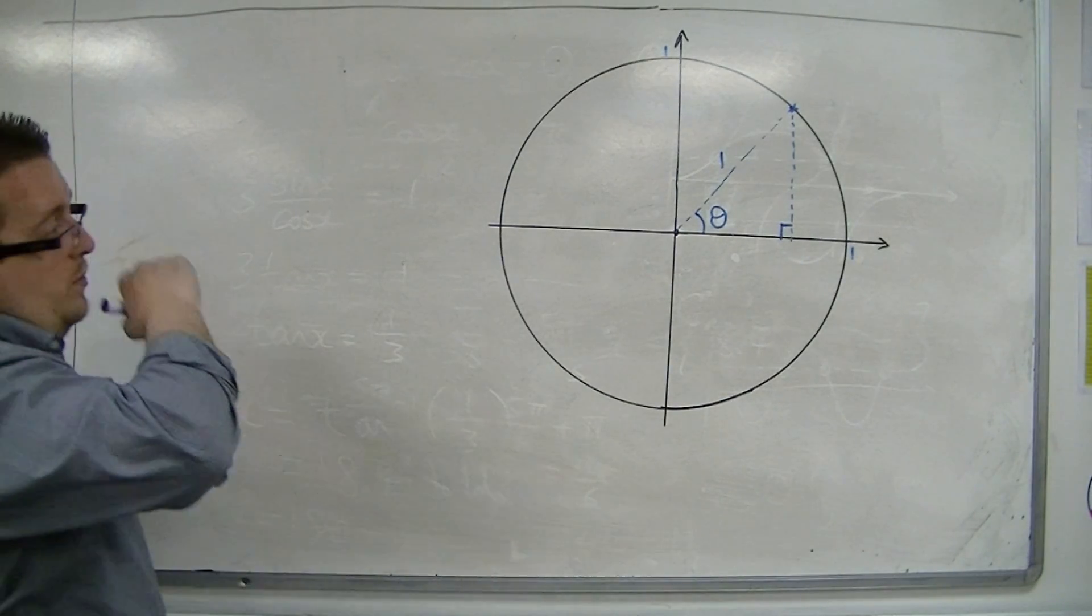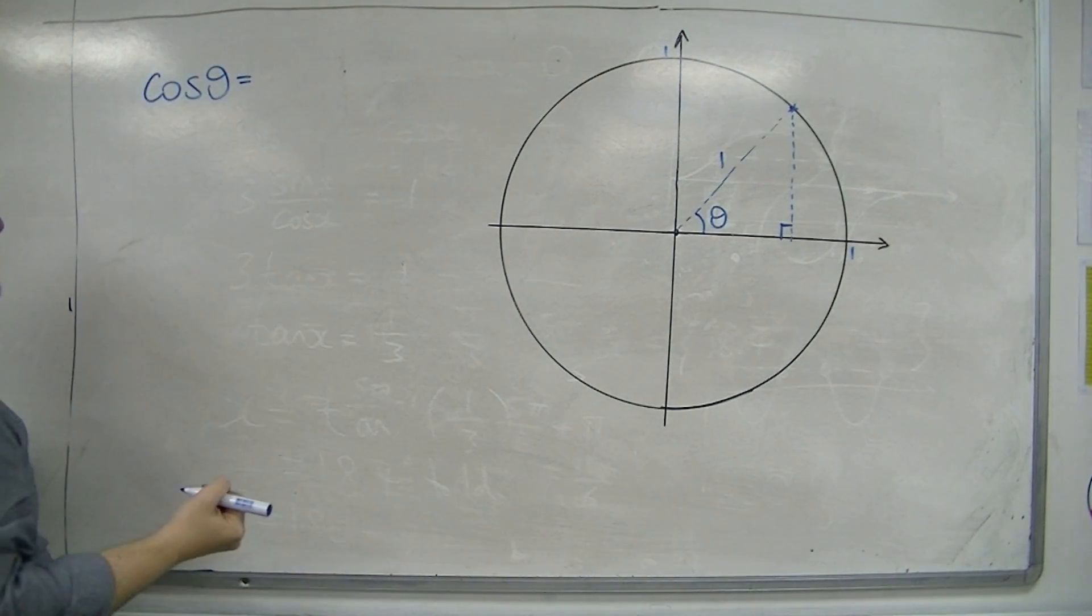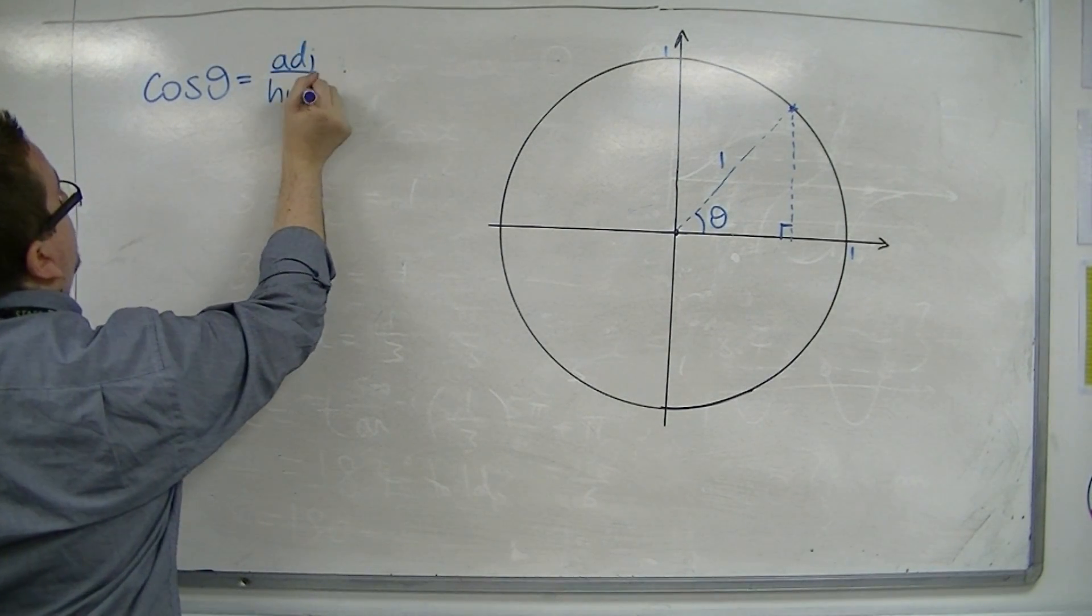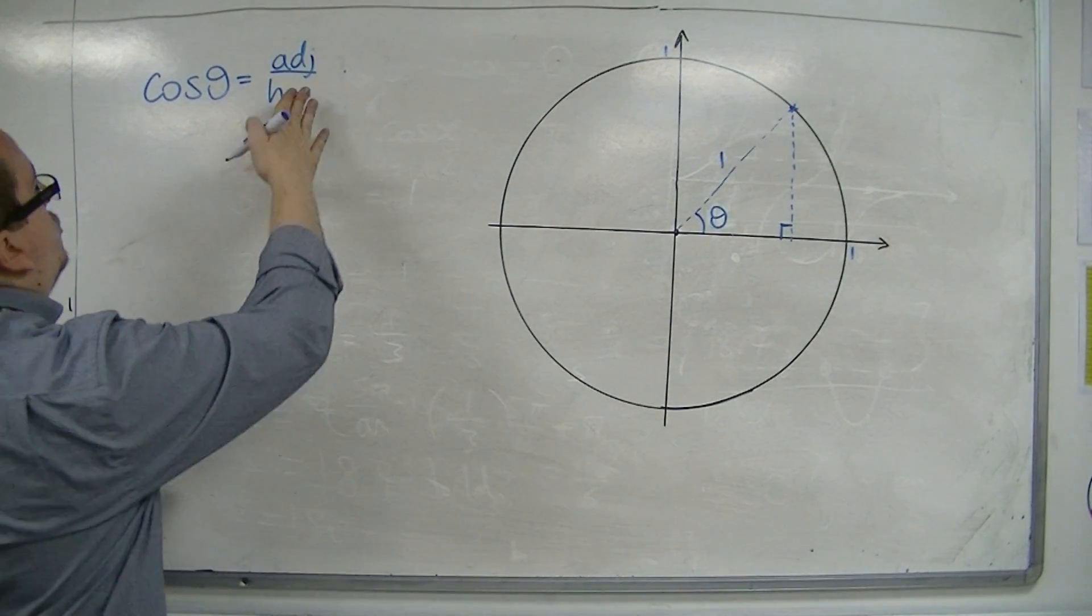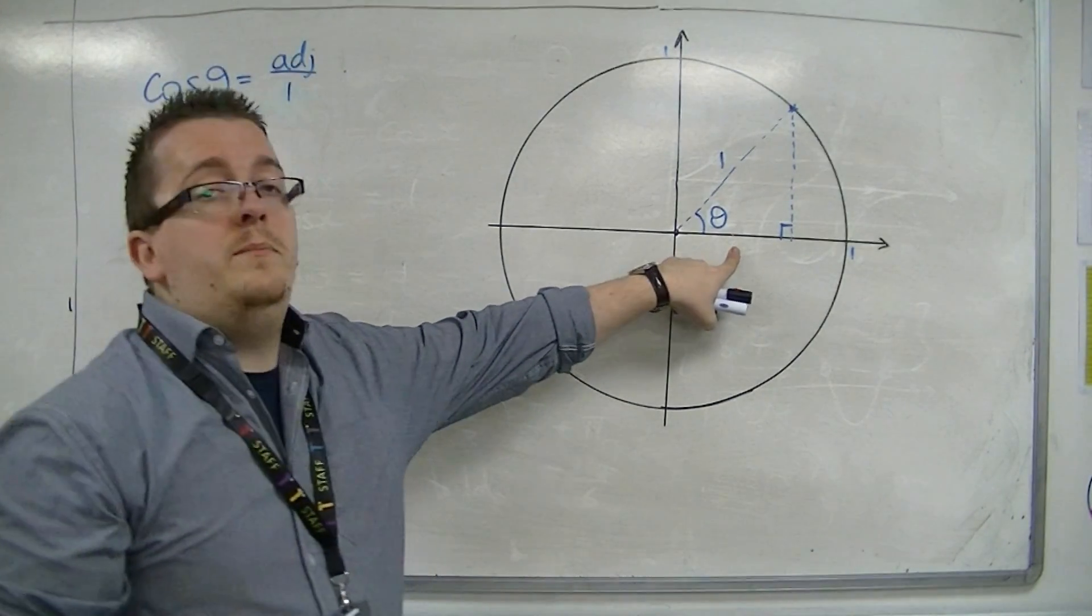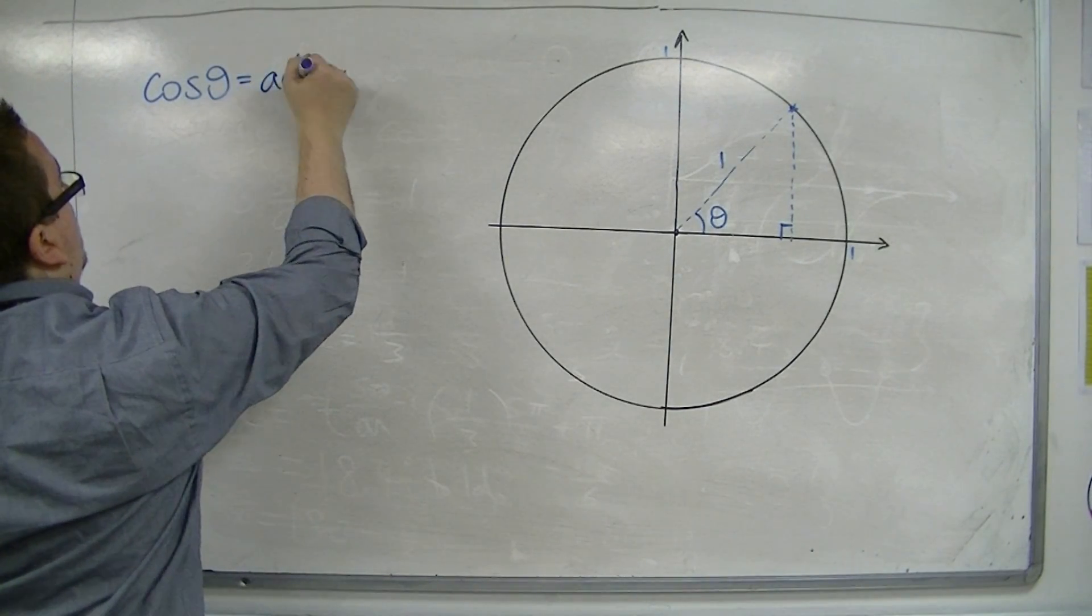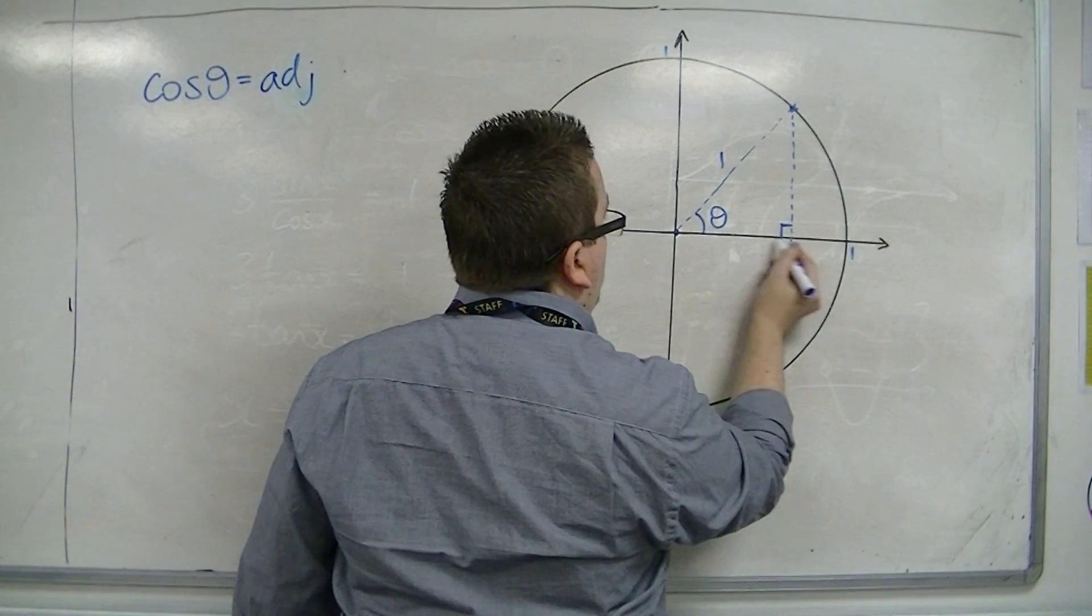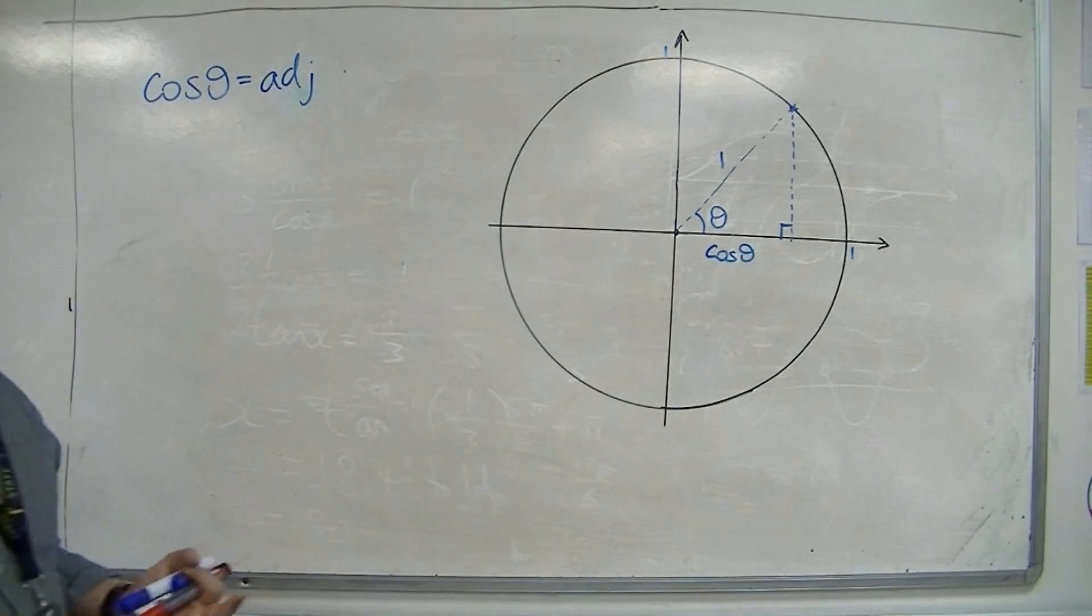then we should know that cosine of an angle is equal to the adjacent over the hypotenuse. Now, if the hypotenuse is 1, then actually what we have is that cosine of theta is the adjacent divided by 1. So actually, cosine of theta is just the adjacent. So we could write the length, the base, the length of the base of the triangle as cos theta.